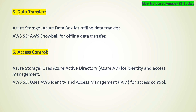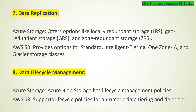Access Control: Azure Storage uses Azure Active Directory (Azure AD) for identity and access management. AWS S3 uses AWS Identity and Access Management (IAM) for access control. Data Replication: Azure Storage offers locally redundant storage (LRS), geo-redundant storage (GRS), and zone-redundant storage (ZRS). AWS S3 provides options for standard, intelligent tiering, one zone IA, and glacier storage classes.